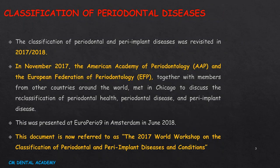Classification of periodontal disease — this is a very important and frequently asked question during your MFDS Part 1 exam. The classification of periodontal and peri-implant disease was revisited in 2017 and 2018. Till then, the 1999 classification was accepted worldwide. In November 2017, the American Academy of Periodontology and the European Federation of Periodontology, together with members from other countries, met in Chicago to discuss reclassification. This was presented at Europerio 9 in Amsterdam in 2018, now referred to as the 2017 World Workshop on the Classification of Periodontal and Peri-implant Diseases and Conditions.